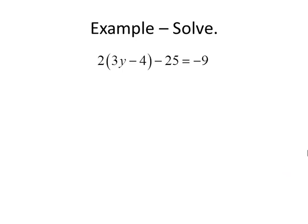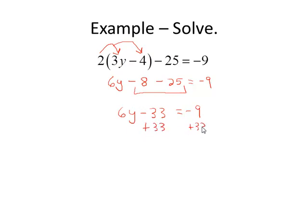As we look at this problem, we can see instantly that we have an opportunity to distribute 2 into this first set of parentheses, and that's where we'll begin. 2 times 3y is 6y, minus 2 times 4 is 8, and then we copy the rest of the terms down both sides. Notice I have some like terms to combine next. 6y minus 33 equals negative 9. I've got all the variables together on the left, so I need to move the constants to the right, add 33 to both sides. 6y equals 24. Finish by dividing by 6. And our solution is y equals 4.